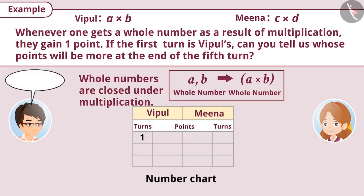Like here, Vipul picked the numbers 2 and 3 in the first round and the result of his multiplication was 6. Hence, Vipul's score increased by 1. Similarly, Meena picked the numbers 3 and 4 and after multiplying them, she got 12, which is a whole number too. Therefore, Meena will also get one point.